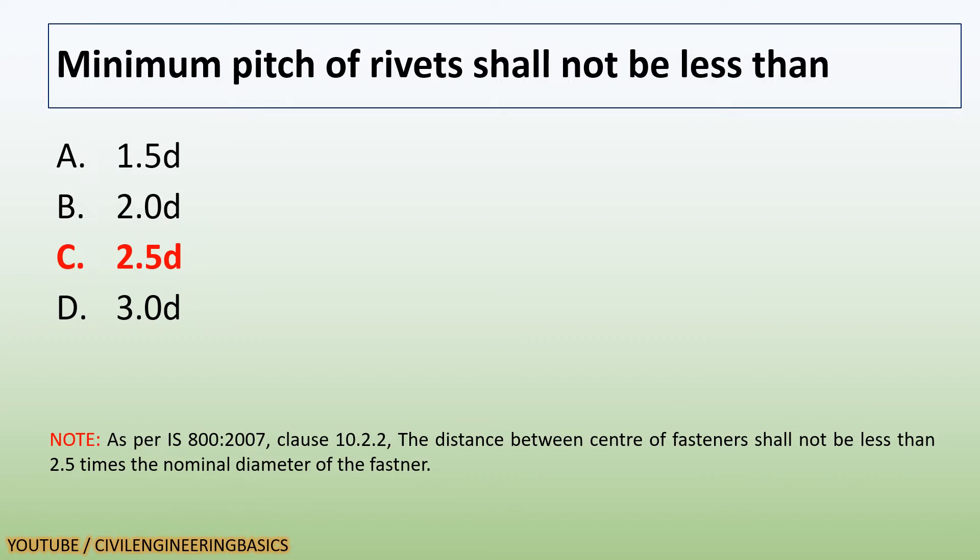Minimum pitch of rivets shall not be less than 2.5d. Note, as per IS 800-2007, clause 10.2.2, the distance between center of fasteners shall not be less than 2.5 times the nominal diameter of the fastener.